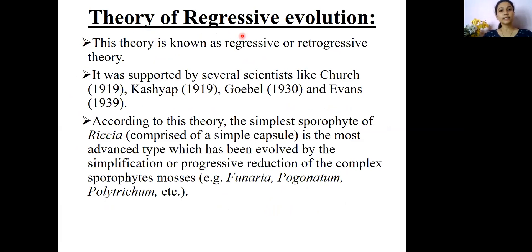Now this brings us to the other theory called the theory of regressive evolution. According to this theory, the simplest sporophyte of Riccia is considered as the most advanced type of sporophyte, and the complex sporophytes like Funaria and Polytrichum have been evolved by the process of simplification, or progressive reduction, or regressive evolution of the complex fertile tissues present in Riccia.